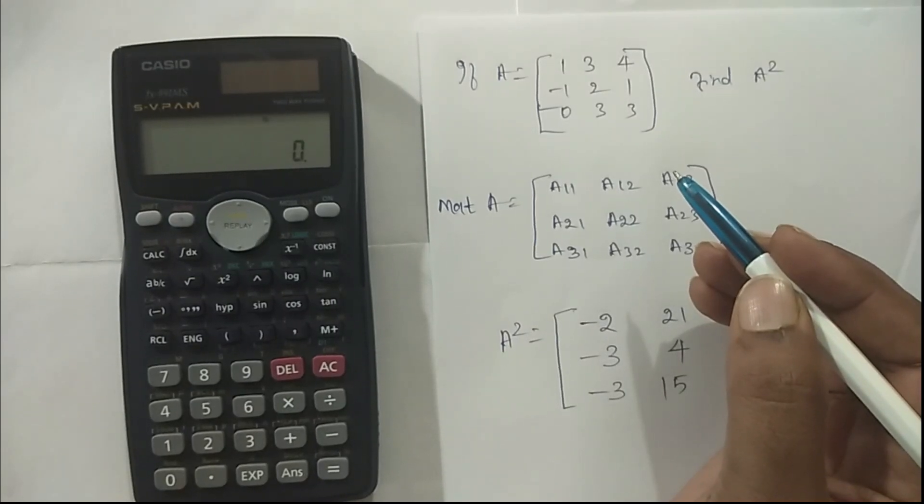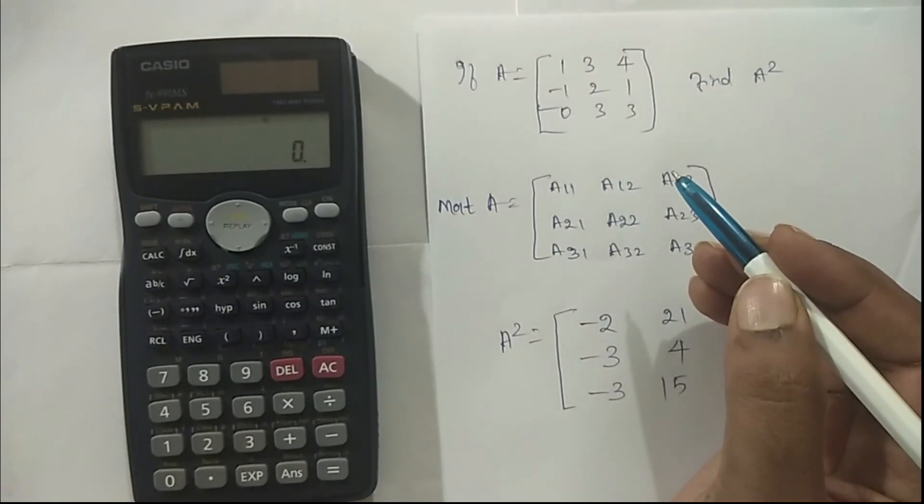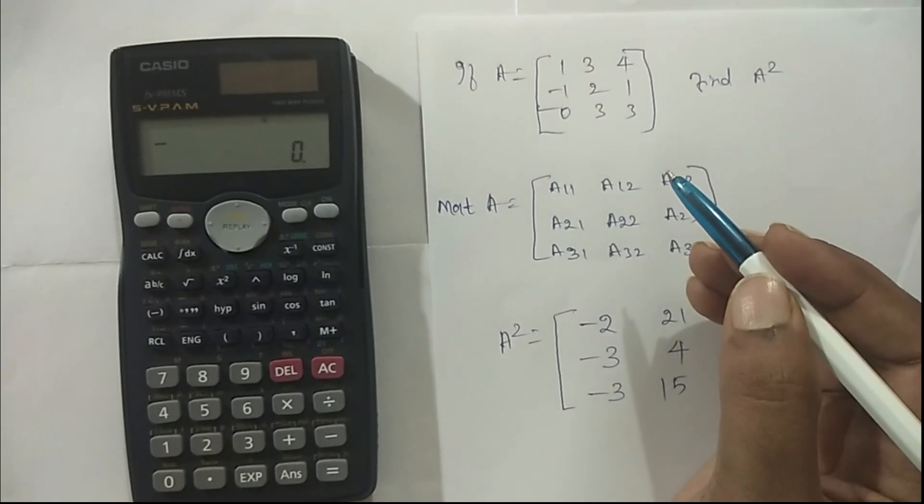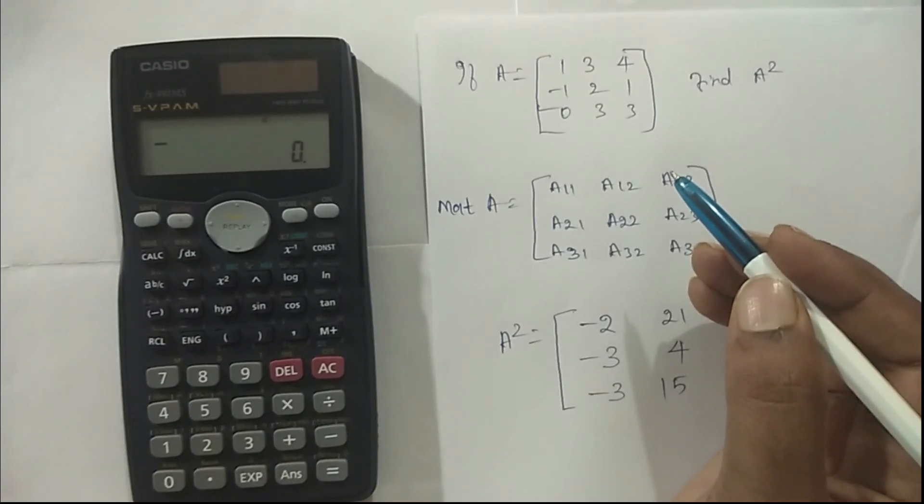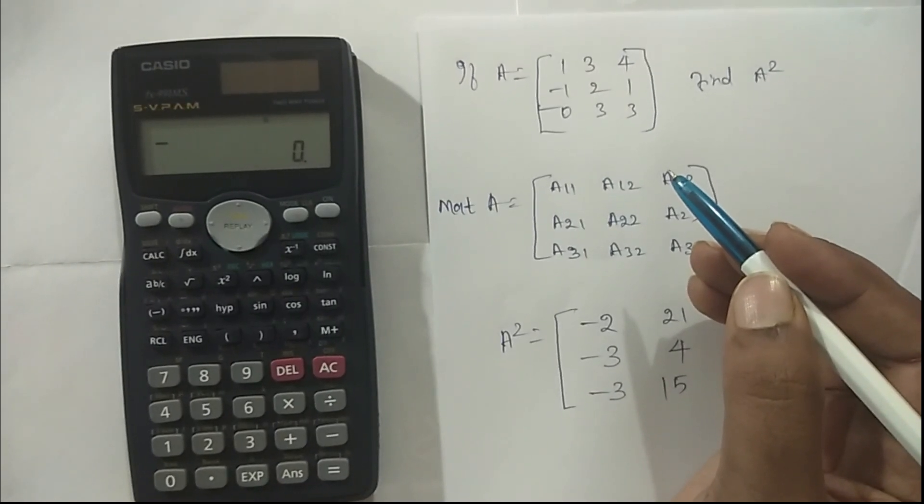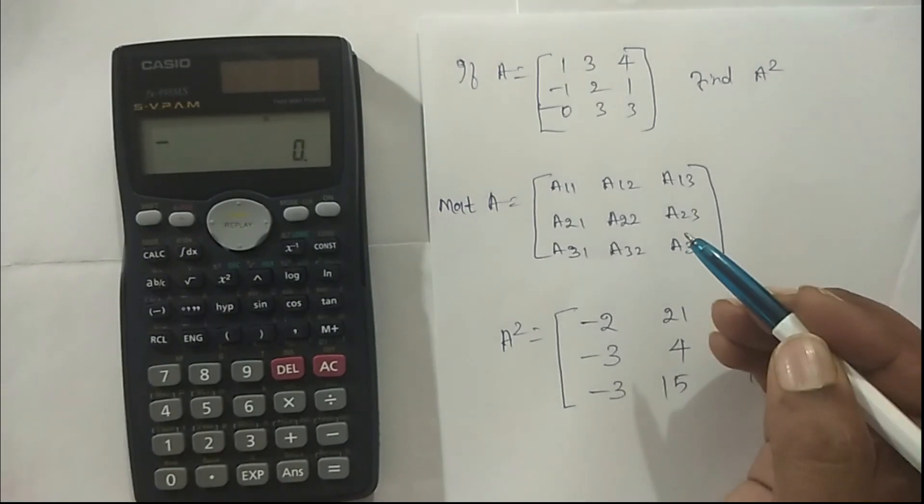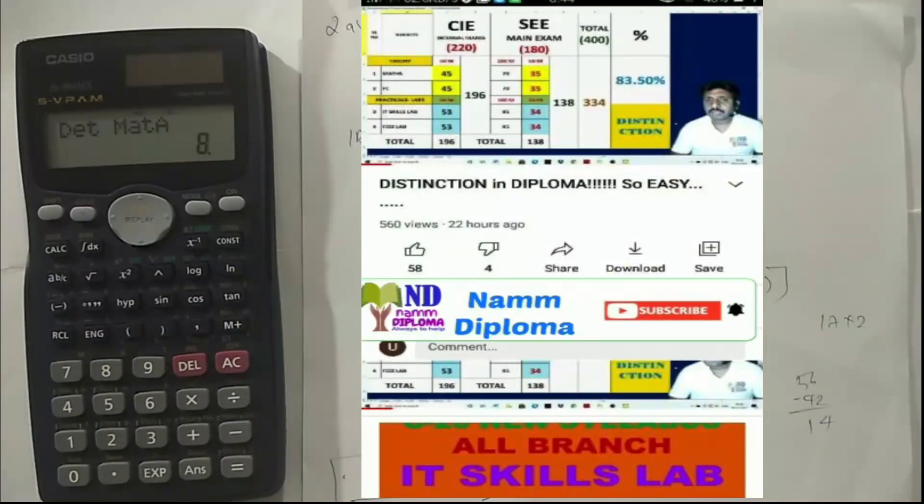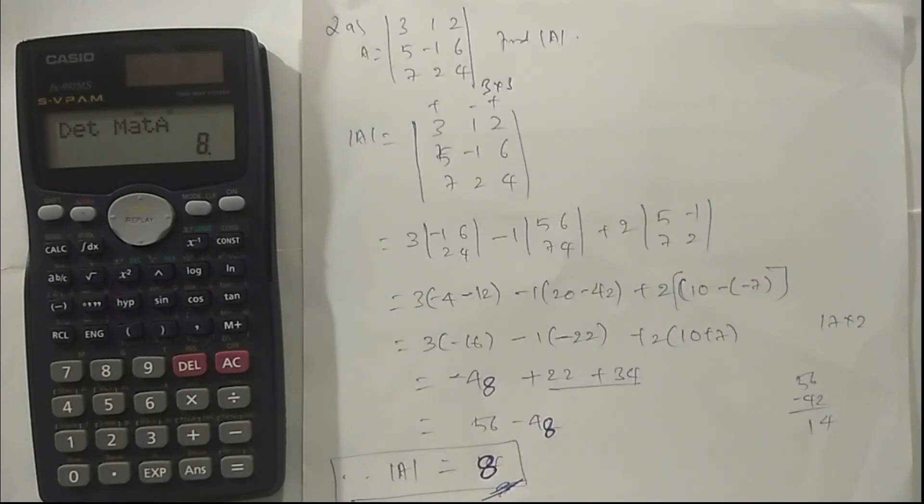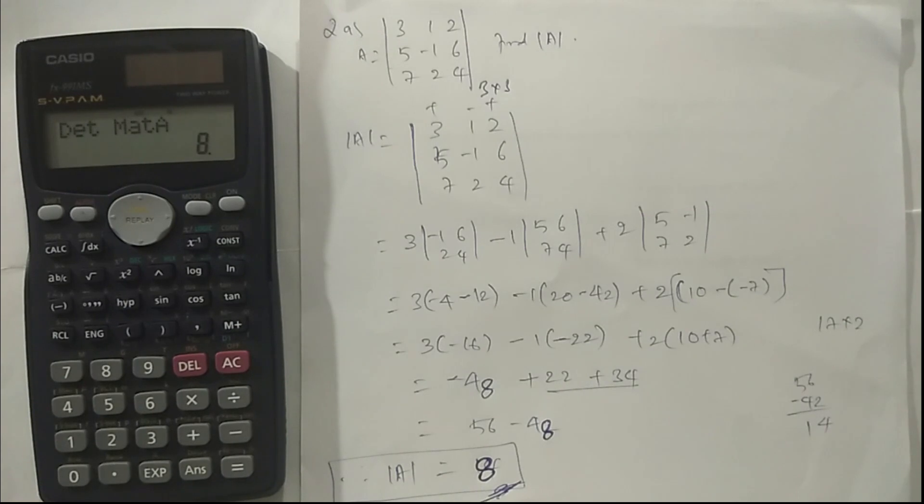Welcome back students, in this video we're going to see how to calculate matrix multiplication in a scientific calculator 991 MS. It can be 2x2 order or 3x3 order. For more such videos, please subscribe to Num Diploma channel. Num Diploma channel is for all diploma students. Please subscribe, like, and share my Num Diploma channel. Thank you.